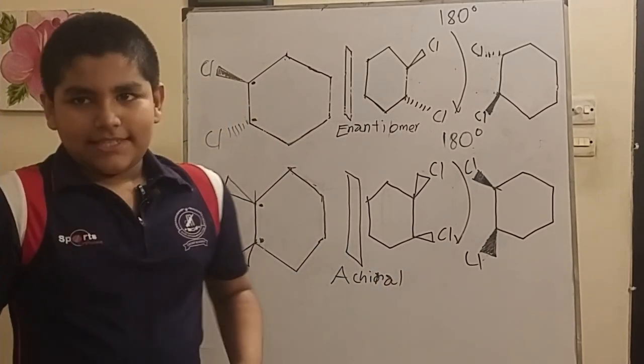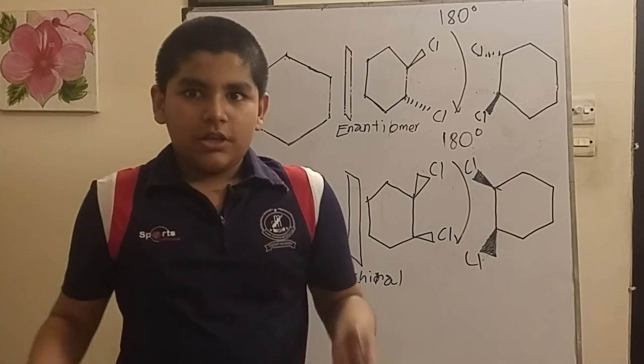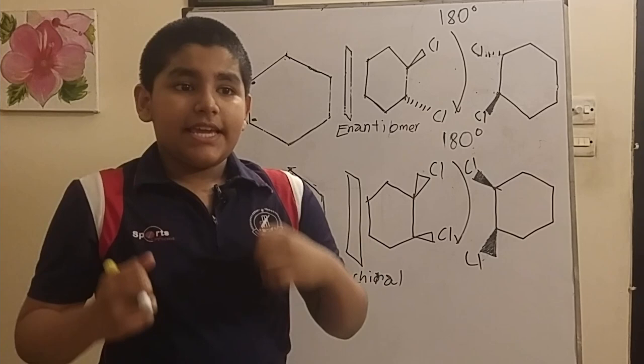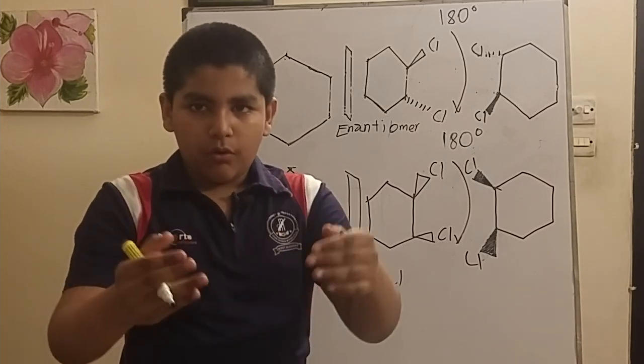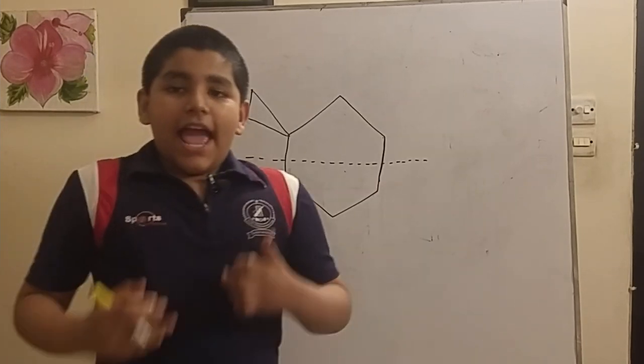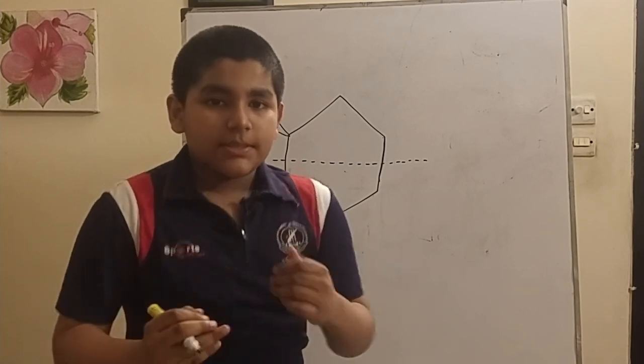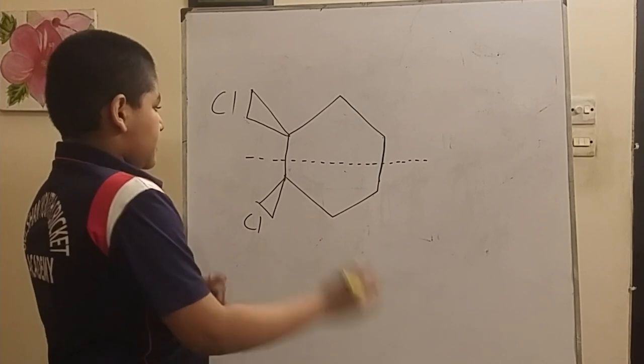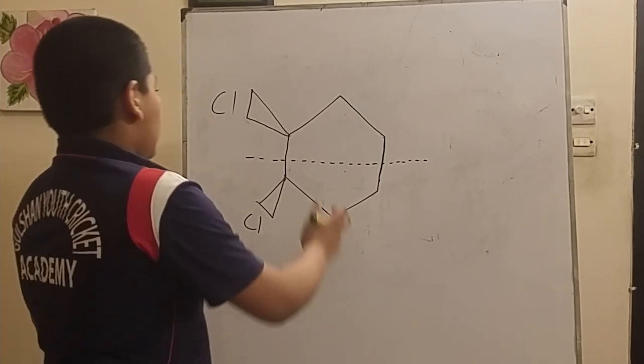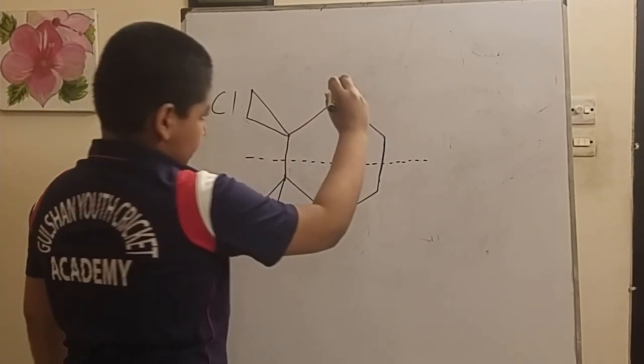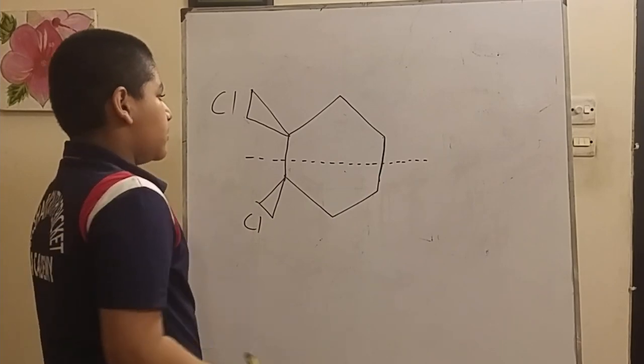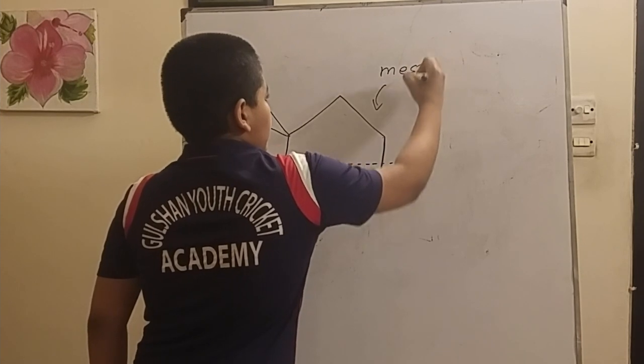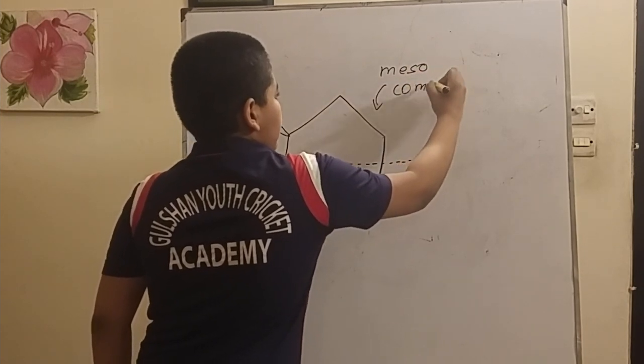Yes, it is possible to have two or more chiral centers but be achiral overall. Now we actually have special terms to define these cases. For this case in my previous example, this is called a meso compound.